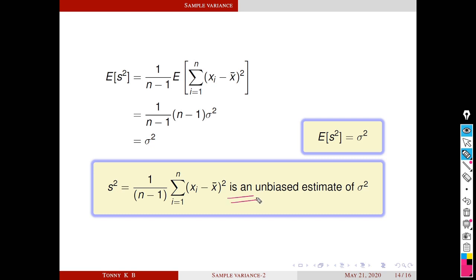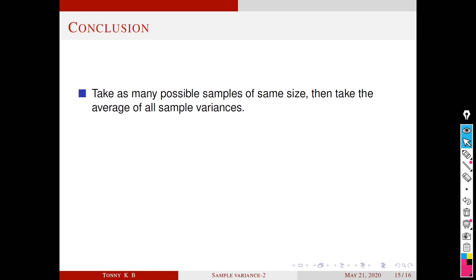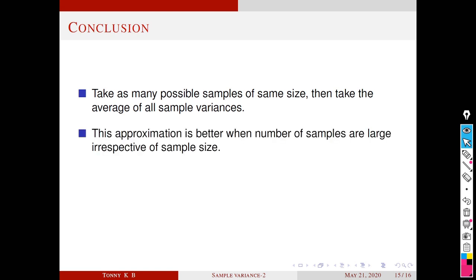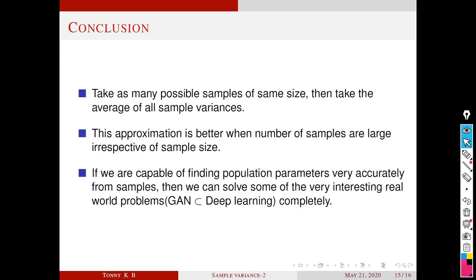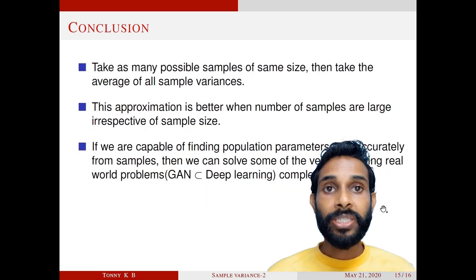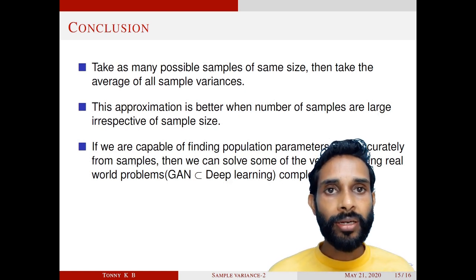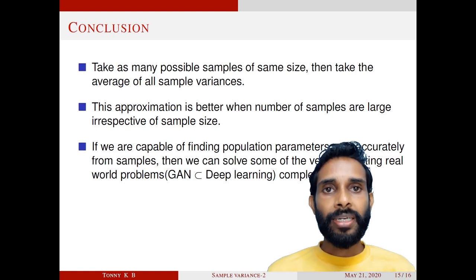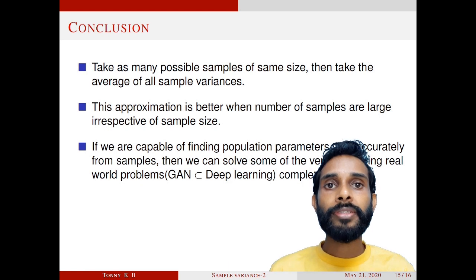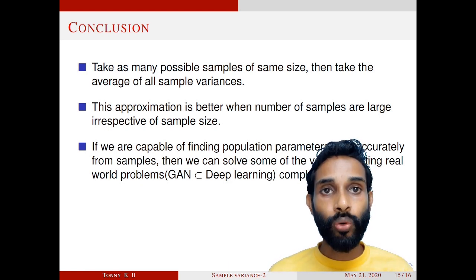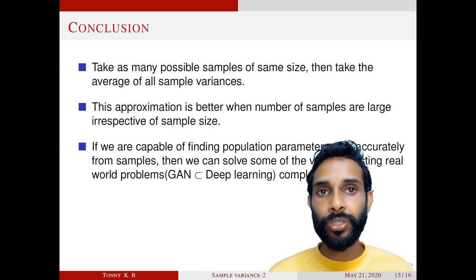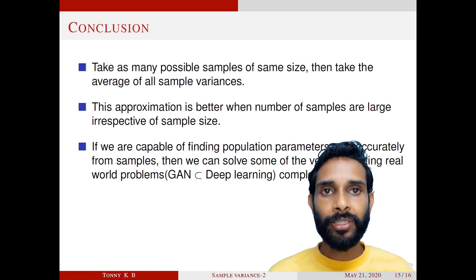This formula gives an idea of how to approximate population variance: take as many possible samples of the same size, then take the average of all sample variances. This approximation is better when the number of samples is large, regardless of sample size. If we are capable of finding population parameters accurately from samples, we can solve very interesting real-world problems. One such application is GANs (Generative Adversarial Networks), a deep learning based probability model where the machine generates samples from a distribution — and this is one of the key importances of parameter estimation. Thank you.